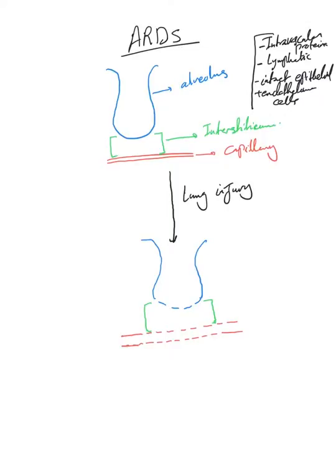This is a normal alveolus here, and this is the interstitium, the green space here, and this is the capillary. Normally this alveolus is dry, has no fluid, and here we have little fluid.